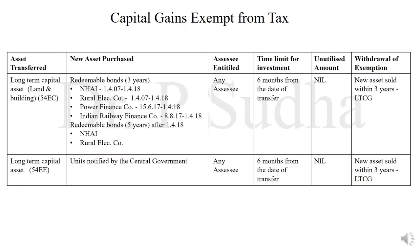The next section is section 54EC, covering long-term capital asset being land and building. Here, normal land and building — it should be long-term, meaning held for more than 36 months. If any land and building held for more than 36 months is sold and there is a capital gain, then this capital gain should be invested in specified assets — redeemable bonds redeemable within 3 years, issued by National Highways Authority of India after 1-4-2007 but before 1-4-2018; or bonds issued by Rural Electrical Corporation after 1-4-2007 before 1-4-2018; 3-year redeemable bonds issued by Power Finance Company after 15-6-2017 before 1-4-2018; or Indian Railway Finance Corporation after 8-8-2017 but before 1-4-2018. Alternatively, redeemable bonds redeemable after 5 years, issued after 1-4-2018 by National Highways Authorities of India or Rural Electrical Corporation.